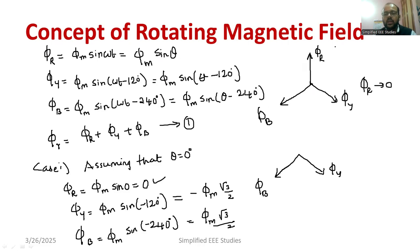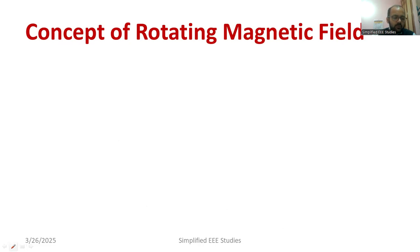Now the resultant flux will be like this only. I can draw the resultant flux. This will be the resultant flux Φ_R. Small letter R, Φ_R. So let me complete my parallelogram. I am going to complete my parallelogram. Remember this will be 60 degree, 60 degree. This will be 60 degree. Now I am going to apply parallelogram law vector addition.